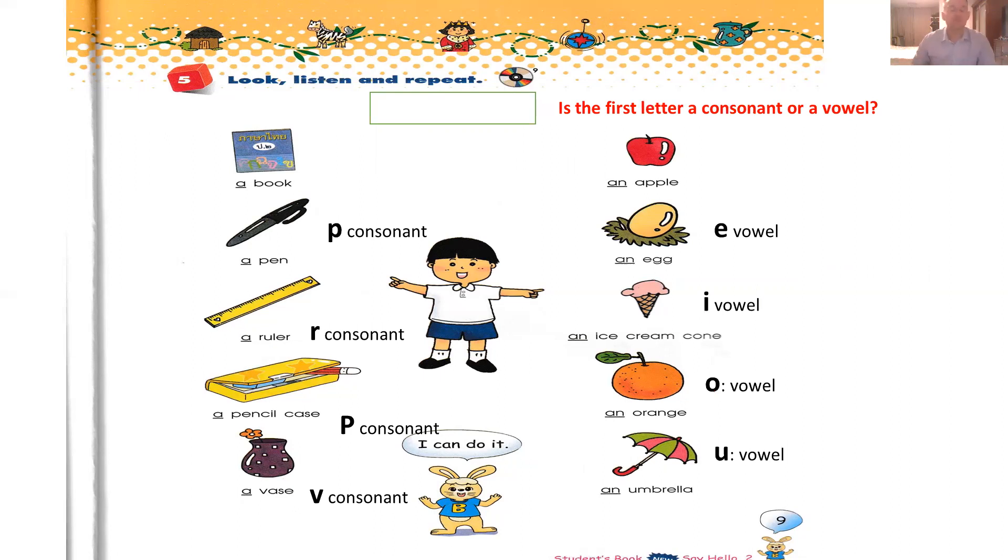Okay, so I hope you understood the exercise. If not, now you can restart and follow me. A pen, P, consonant. A ruler, R, consonant. A pencil case, P, consonant. Case, it's C, consonants too. A vase, V, consonant. Now, an egg, E, vowel. An ice cream, I, vowel. An orange, O, vowel. And an umbrella, U, vowel.